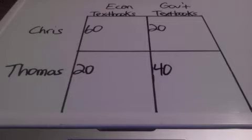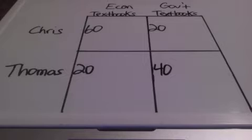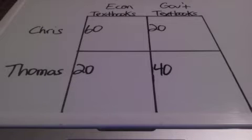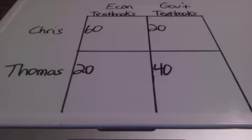Chris can produce 60 econ textbooks and 20 government textbooks. And Thomas can produce 20 econ textbooks and 40 government textbooks. Our goal is to see who is going to specialize in the production of these two goods — we refer to this as who has the lower opportunity cost, meaning who is giving up less of the other good and or service.